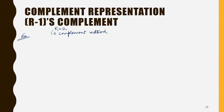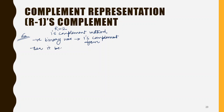What does the 1's complement method mean? It means that if there is a negative binary number and it is converted into its 1's complement form, it becomes a positive representation of the number, so that we can add it to the minuend to perform subtraction. So for a negative binary number, suppose I want to do this subtraction — let us take an example.